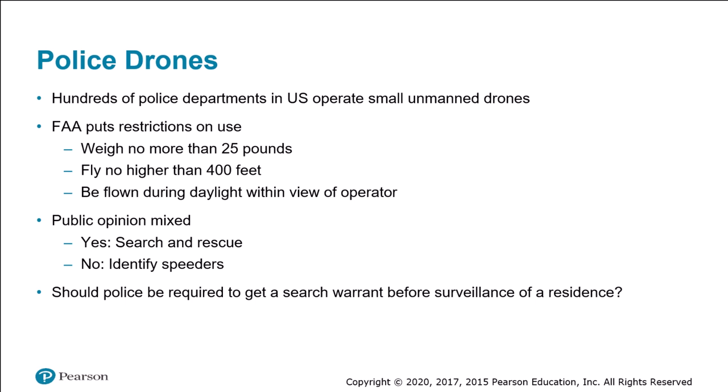Numerous cities and states are currently debating what controls, if any, should be placed on the use of drones by police. For example, should police be required to get a search warrant before deploying a drone, or should they be able to use a drone to collect evidence needed to get a search warrant? Seattle police purchased two drones but, after strong public protest, Mayor Mike McGinn ordered them sent back to the manufacturer. Florida, Virginia, and Idaho have passed laws prohibiting the use of police drones for crowd surveillance at public events.